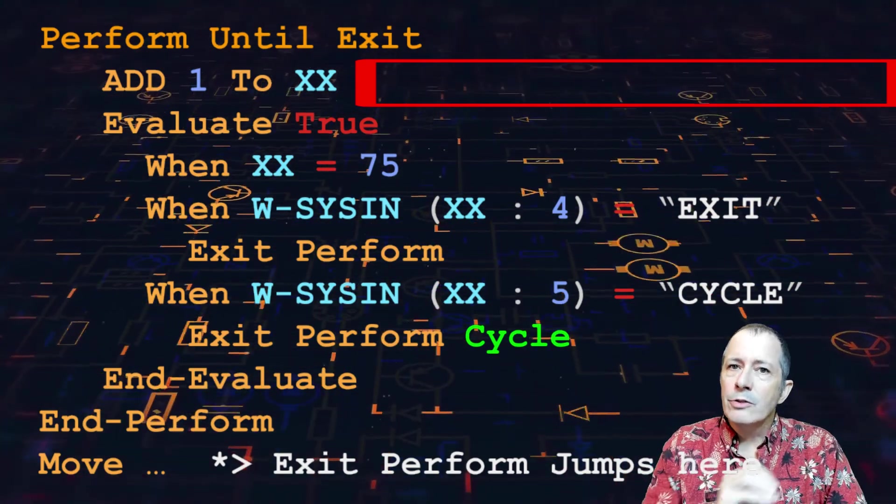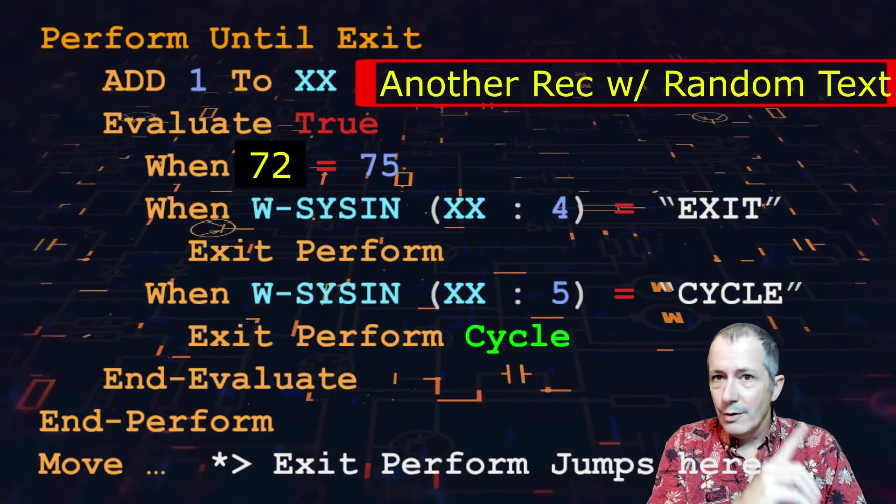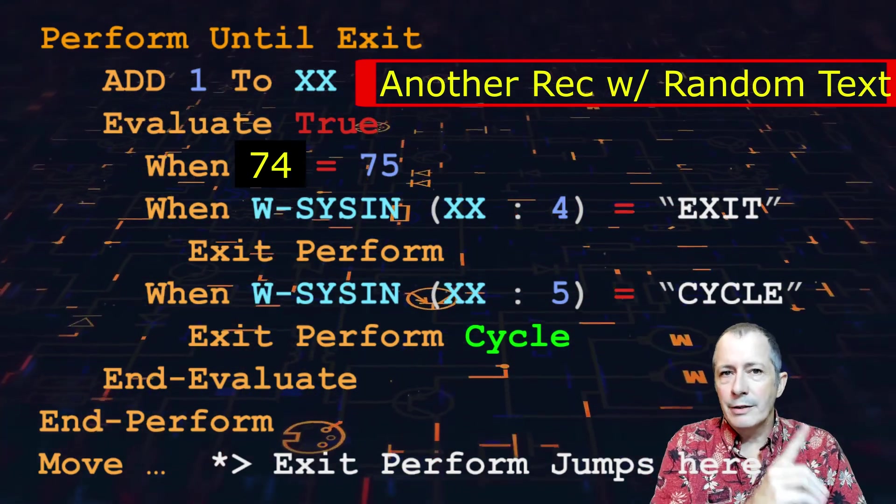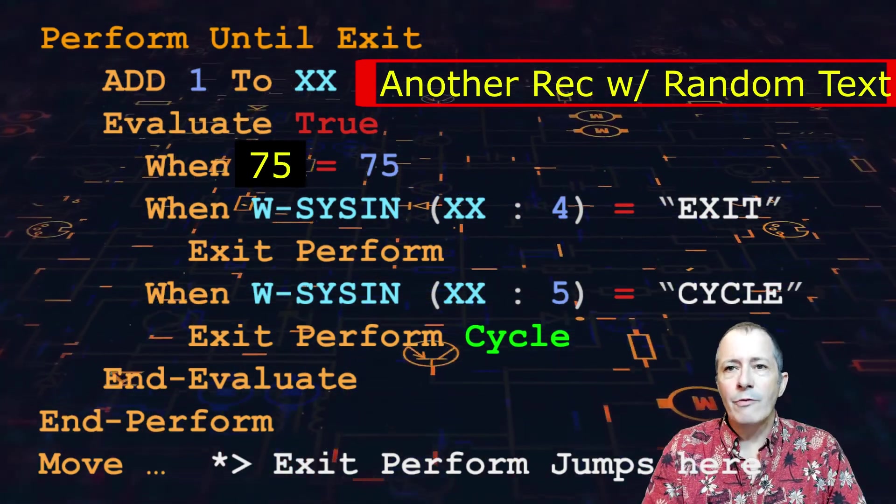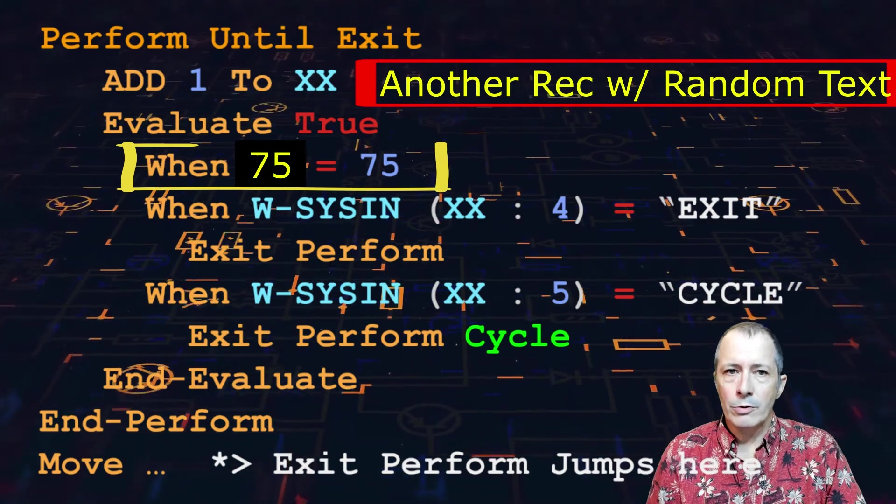If the word exit is not on the record, the loop terminates when xx becomes 75, which makes the first when clause true.